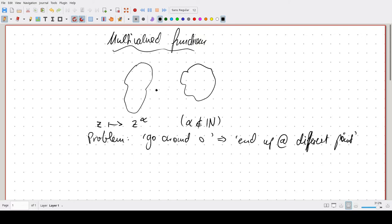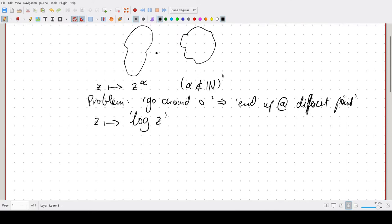A similar problem you of course also get for example with the logarithm of z, whatever that is supposed to be. You start off for example at one, you say log one is zero sure, and then you go a bit and you're at i, then you have log i.